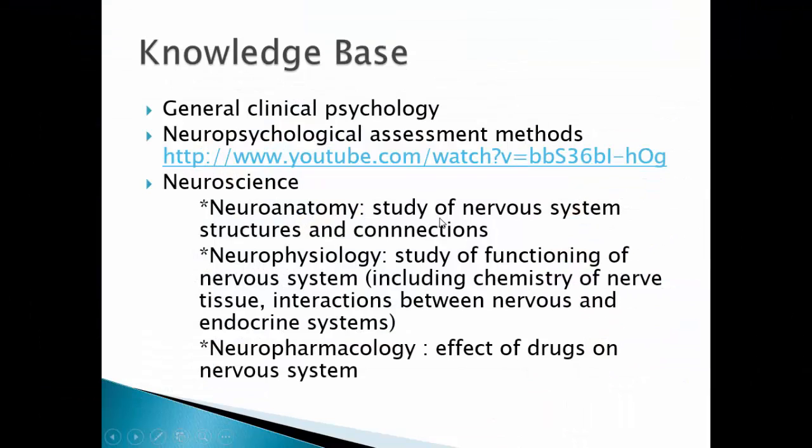The third knowledge base for clinical neuropsychology is the neuroscience field itself. Neuroanatomy is the study of nervous system structures and connections. Neurophysiology is the study of the functioning of the nervous system, including the chemistry of nerve tissues and interactions between the nervous and endocrine systems. Neuropharmacology refers to the effect of drugs on the nervous system.